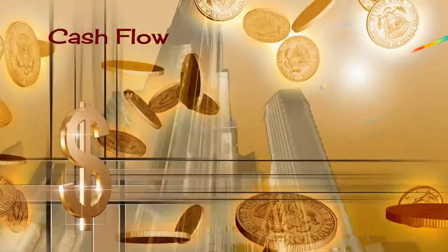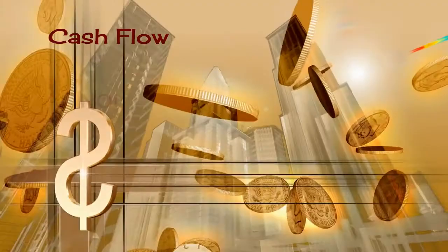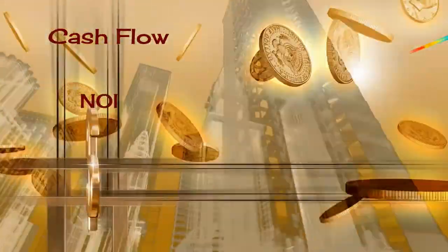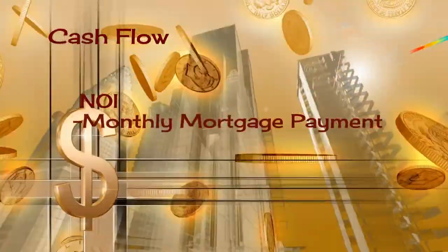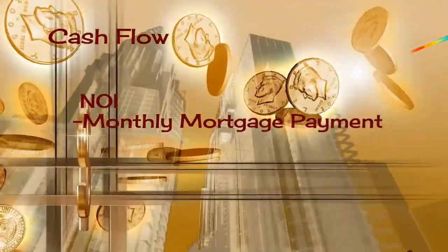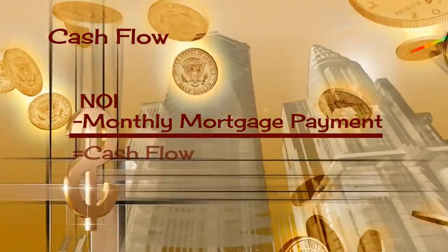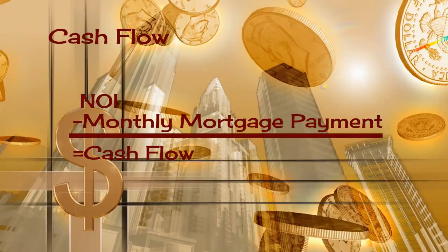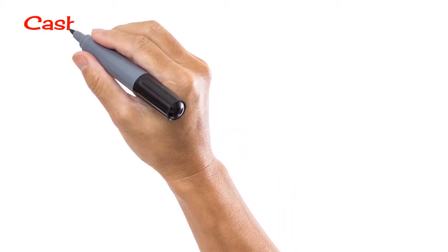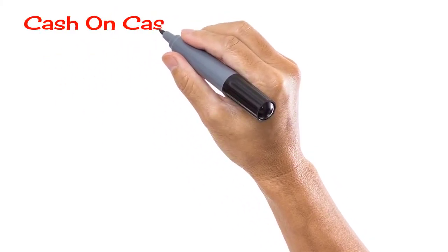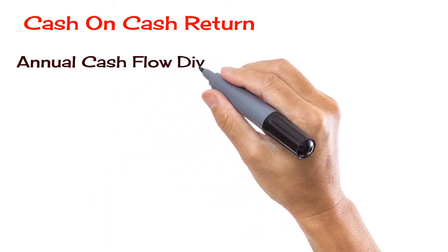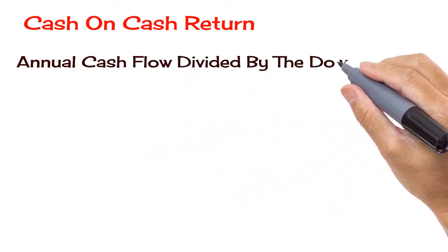The second factor is cash flow. Simply put, cash flow is the net operating income minus the mortgage payment. Obviously, the property should have positive cash flow.